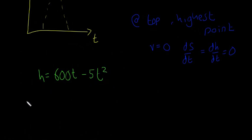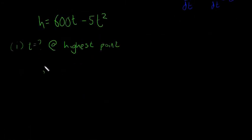The first thing they ask is to find how long it takes until the ball is at its highest point. So I'm just going to say t is equal to what? At highest point. So to find that, we say dh dt is equal to zero. So that'll find us the highest point.